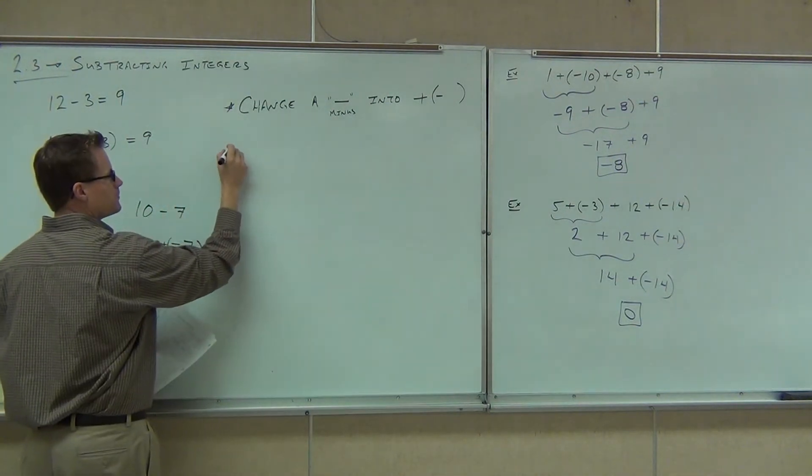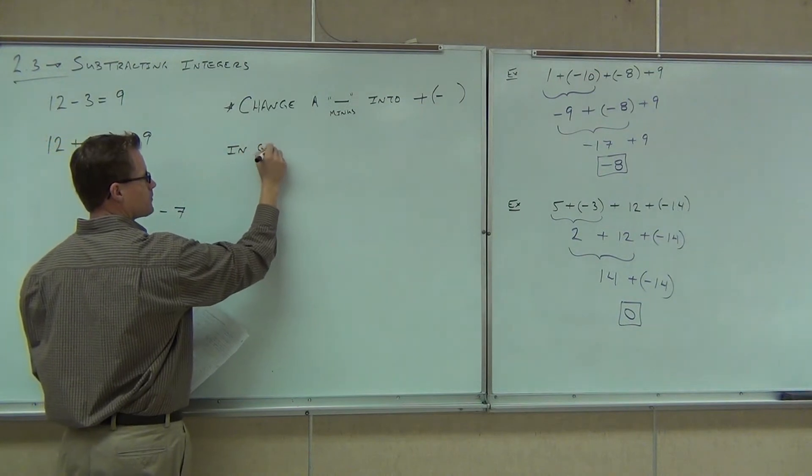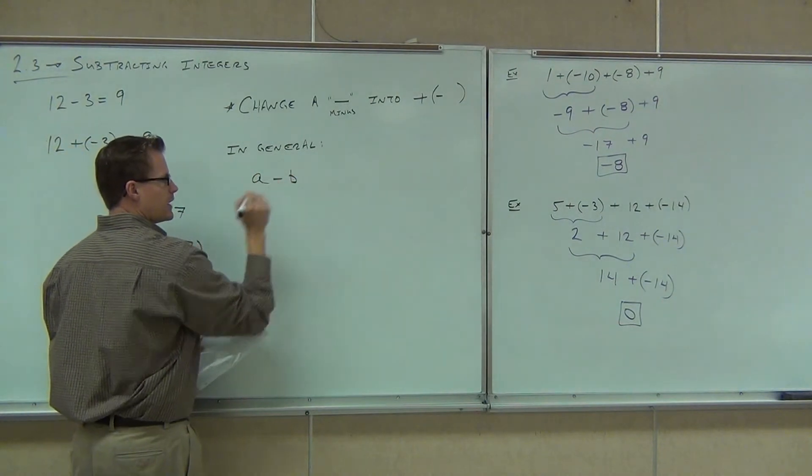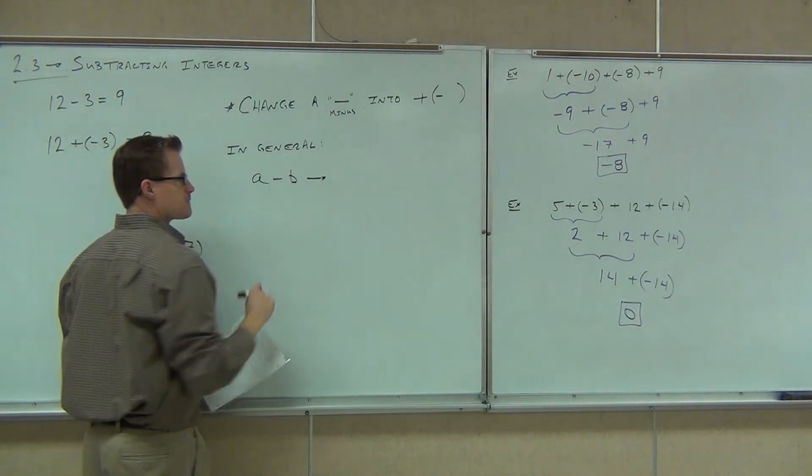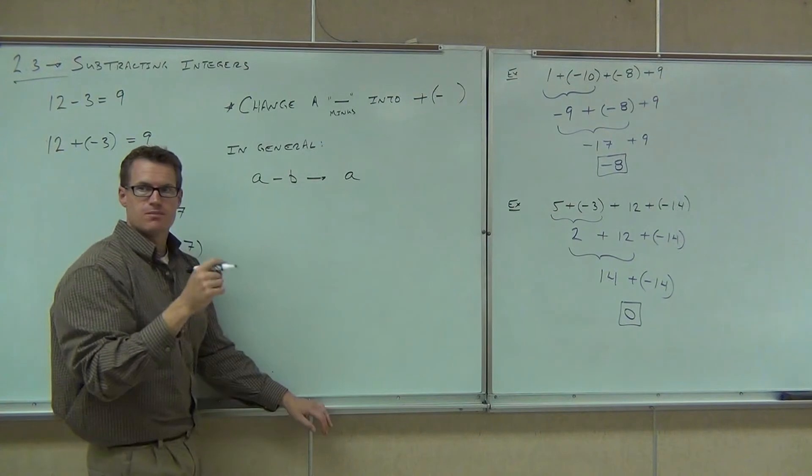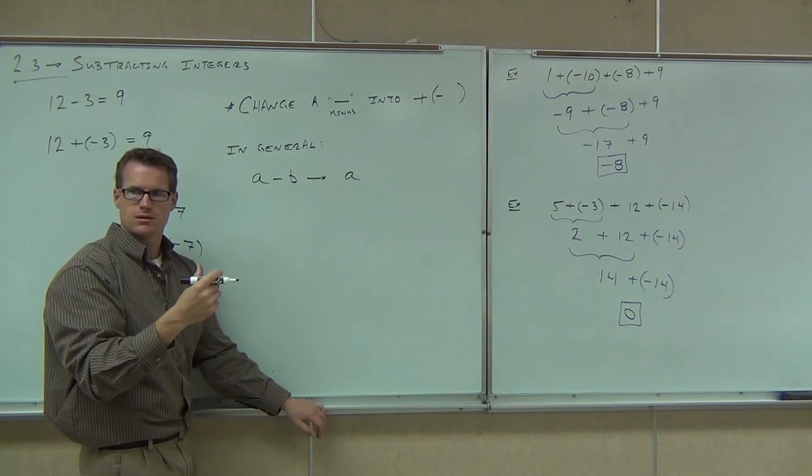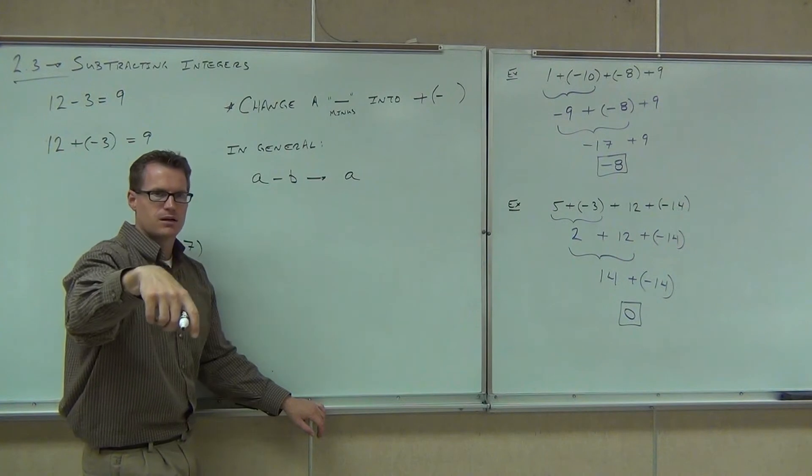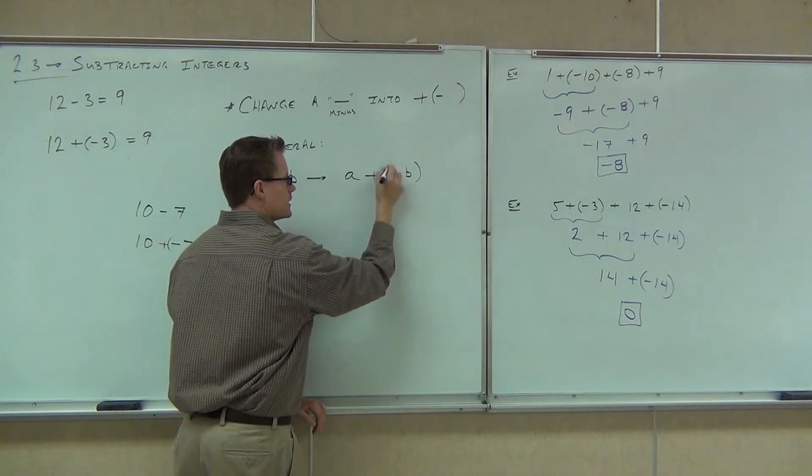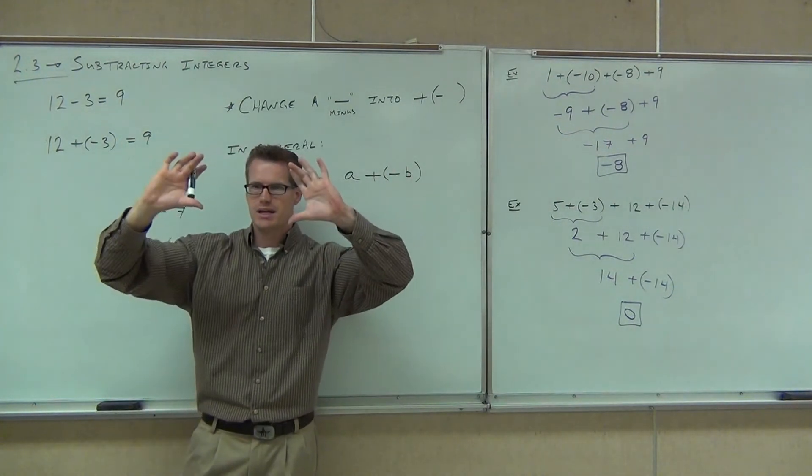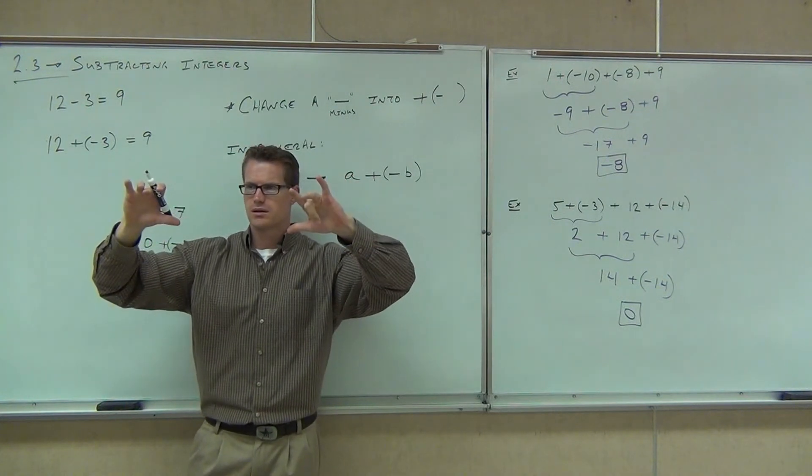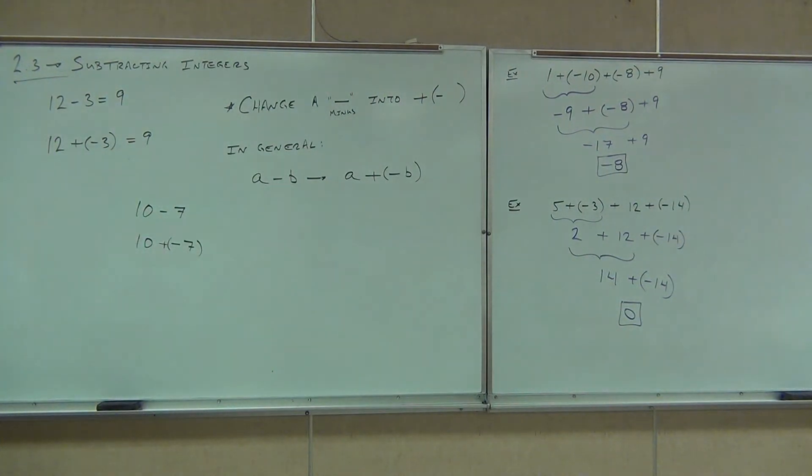So in general, whenever we see a minus b, we're not going to leave it as a minus b. What we're going to do is leave the a, that's fine. We're going to change the minus into a what? A plus. Not just a plus, but we have to have something after that. Negative. Good. A minus becomes a plus negative. Plus negative b. And it's going to be in parentheses to say that that is my negative value right there. Nod your head if you're still with me on this. You guys in the back? Okay. Thank you.